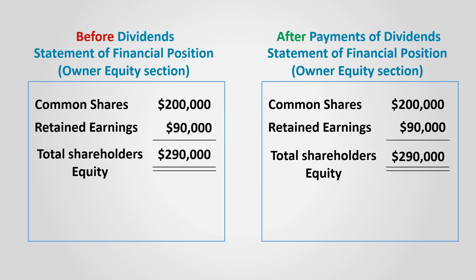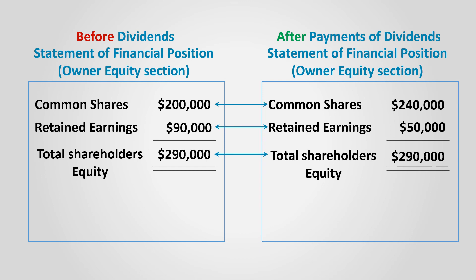Let's compare the shareholders' equity section on the statement of financial position before and after the shares' dividends distribution. The retained earnings is reduced by $40,000 and is added to common shares. Common shares' balance is now $240,000. But notice that the total shareholders' equity is unchanged. What happened is that we reallocated the amount of dividends among the shareholders' equity section. One account, which is the retained earnings, decreased and another shareholders' equity account, which is the common shares, increased. So, the net effect shows no change in total shareholders' equity.